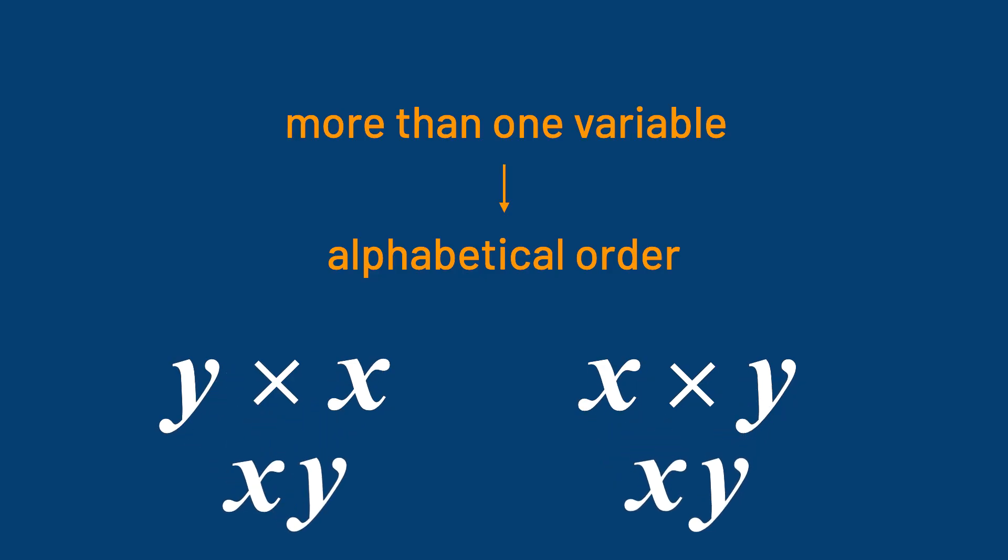When we have more than one variable, we write them in alphabetical order. For example, here we see y times x. That's the same as x times y. Both simplify to xy.